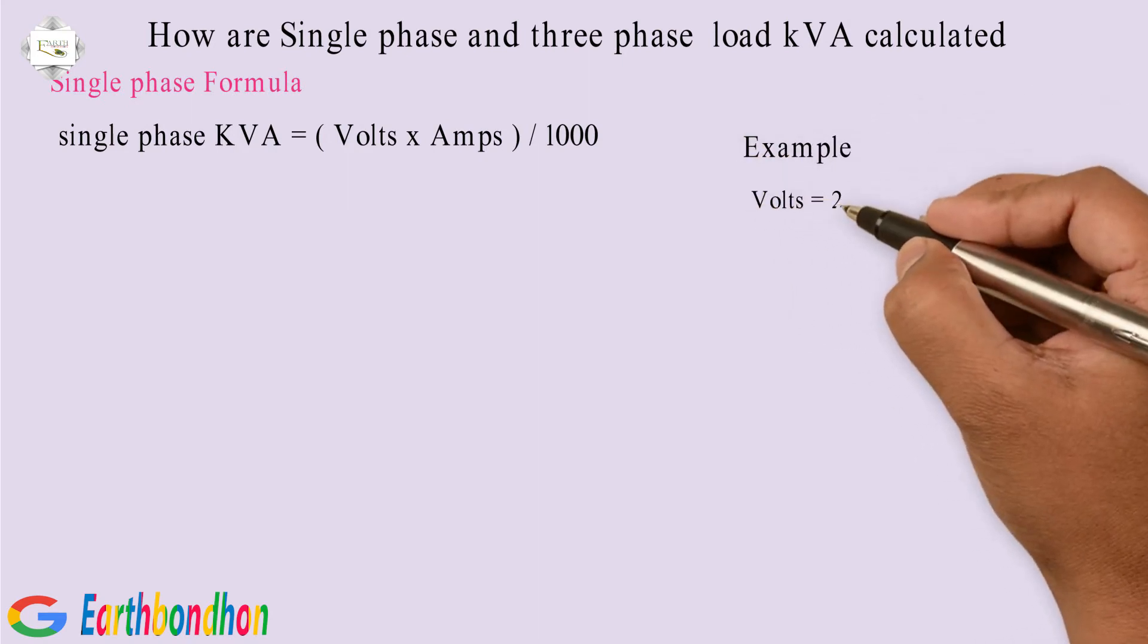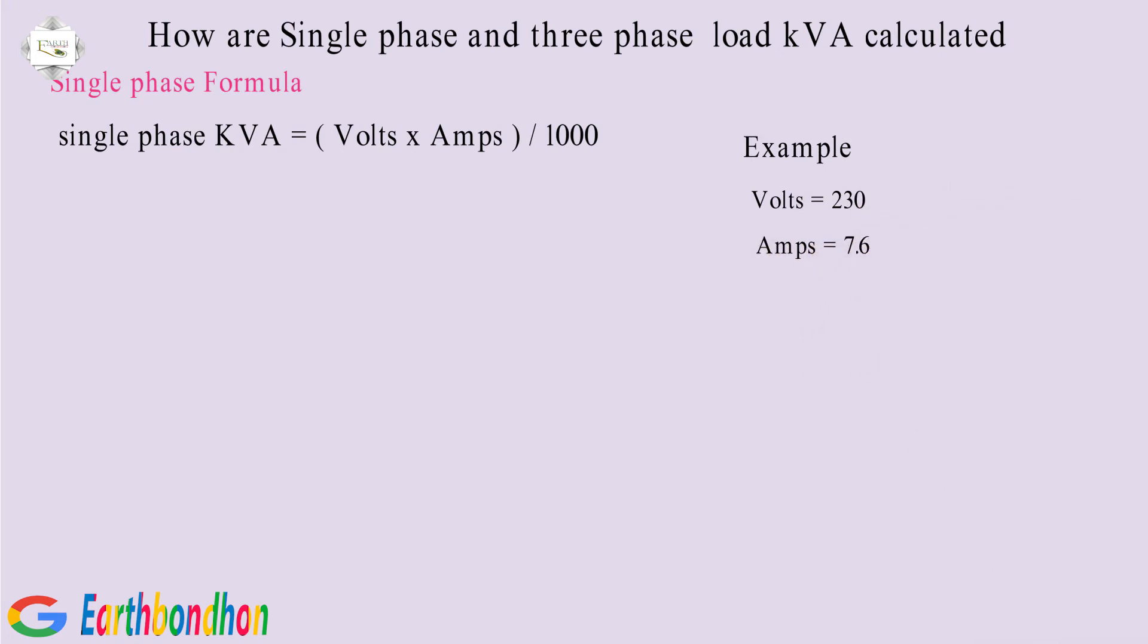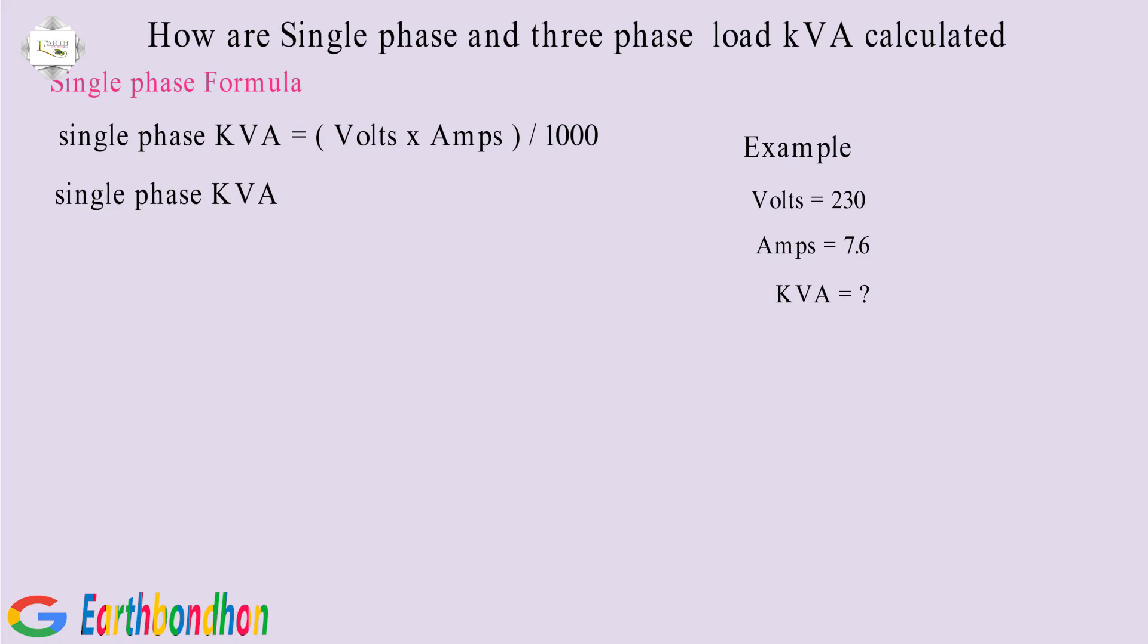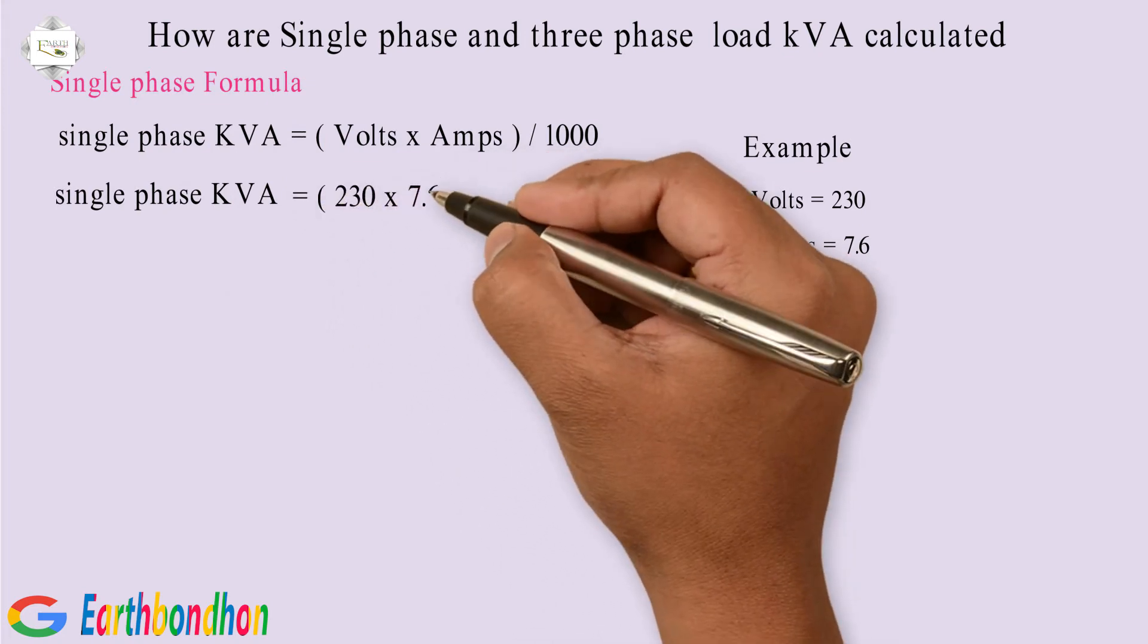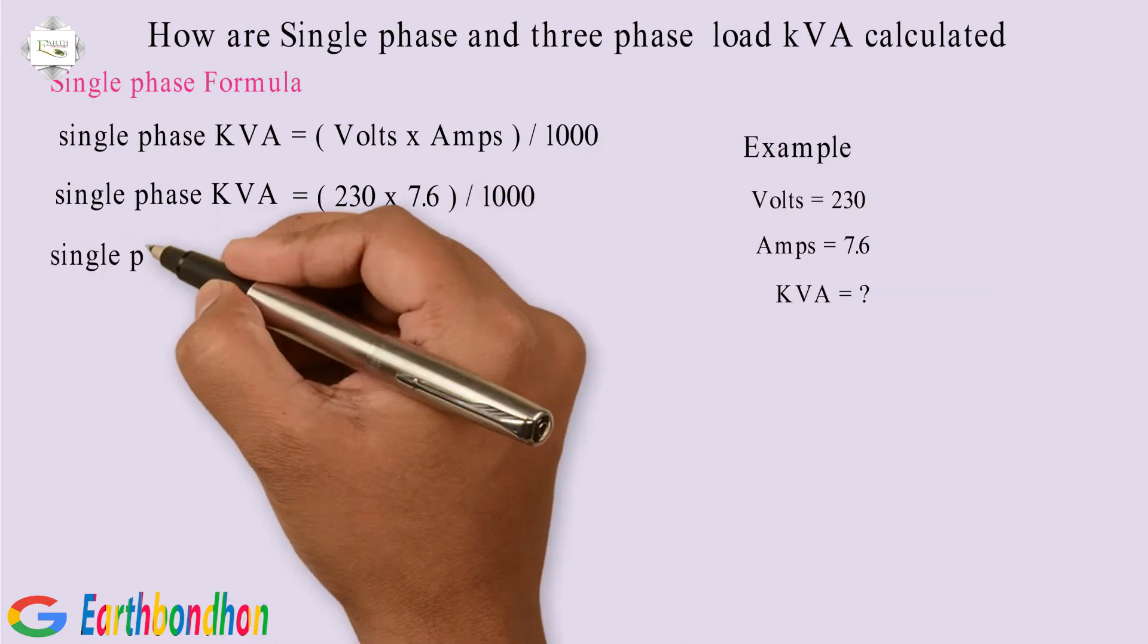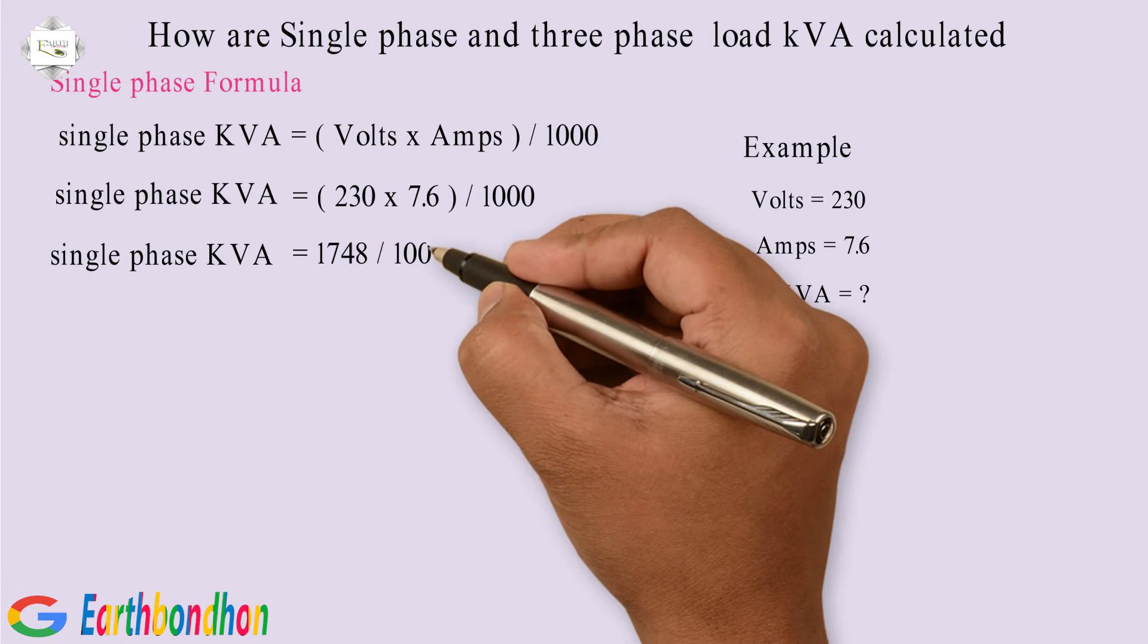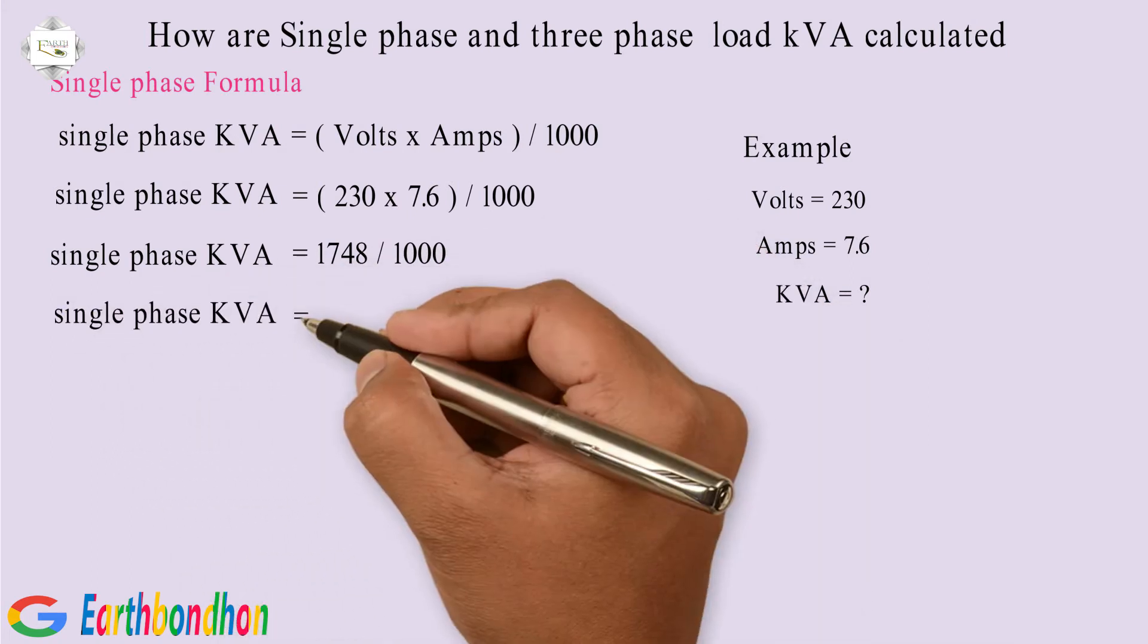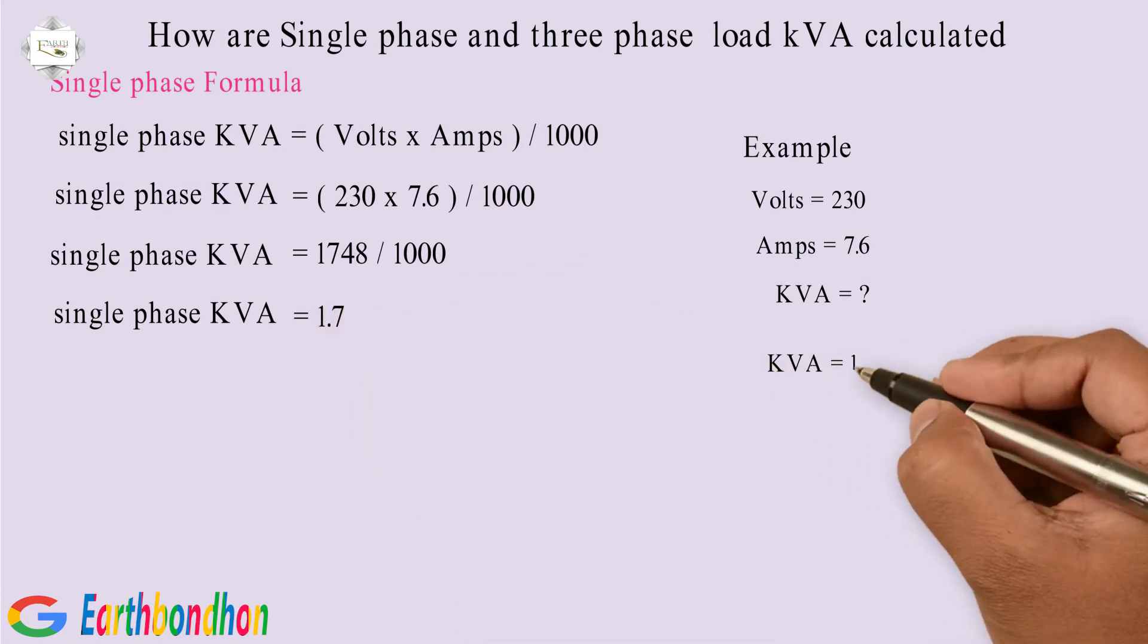Example: Volts equals 230, amps equals 7.6, KVA equals question mark. Equals 230 multiplication 7.6 division 1000. Equals 1748 division 1000. Equals 1.7. KVA equals 1.7.